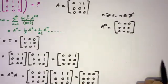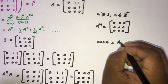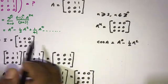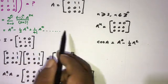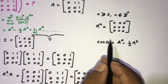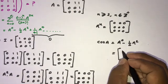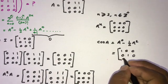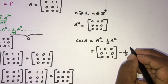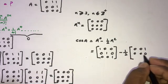So cosine of A equals A^0 minus (1/2) A², and since A^4, A^6, and so on are all the zero matrix, those terms drop out. We have the identity matrix [1,0,0; 0,1,0; 0,0,1] minus one-half times A² = [0,0,1; 0,0,0; 0,0,0].